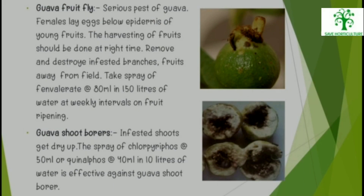Guava Fruit Fly: It is a serious pest of Guava. Females lay eggs below the epidermis of young fruits. Harvesting of fruits should be done at the right time. Remove and destroy infested branches and fruits away from the field, and take spray of fenvalerate at 80 ml in 150 litres of water at weekly intervals on fruit ripening for effective management. Guava Shoot Borers: Infested shoots get dried up. Spray of chlorpyrifos 50 ml or quinalphos at 40 ml in 10 litres of water is effective against Guava shoot borer.